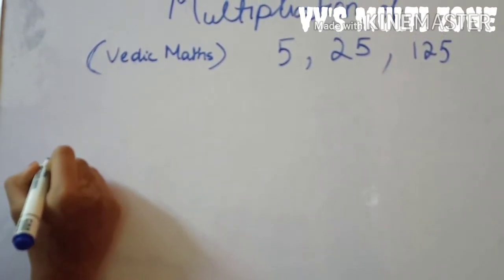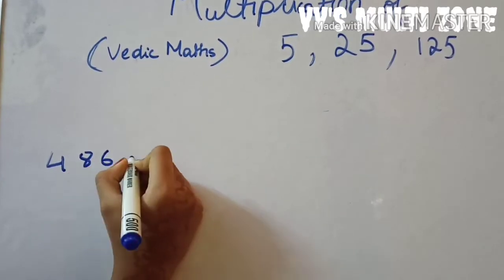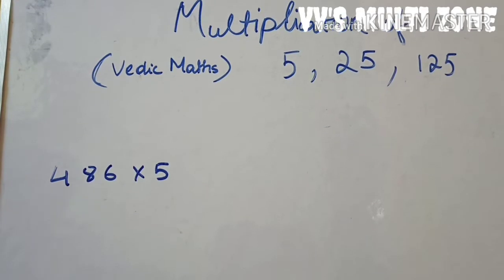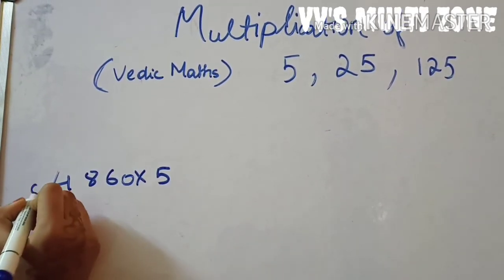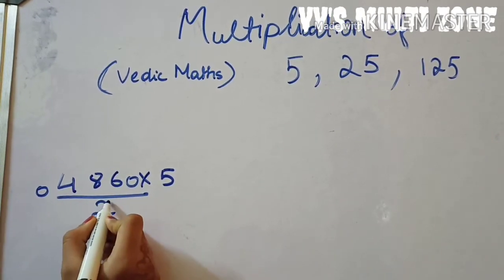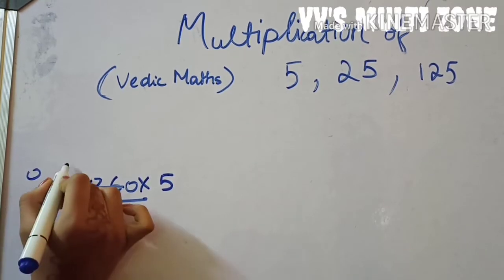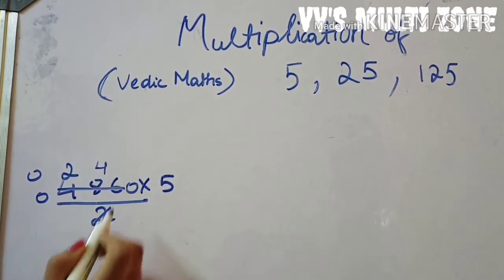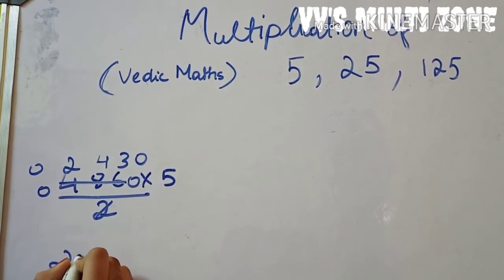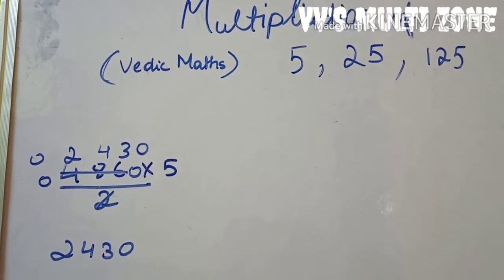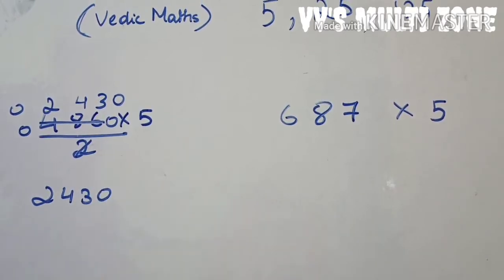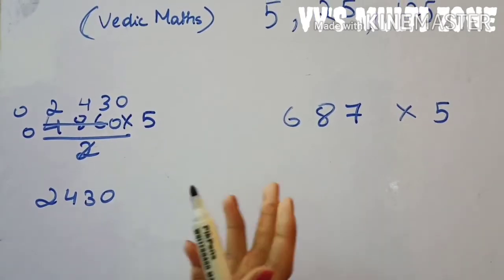The first question is 486 into 5. What I do is add a zero here, and now divide by 2. Two zeros are zero, two twos are four, two fours are eight, two threes are six, two zeros are zero. Your answer is 2430.